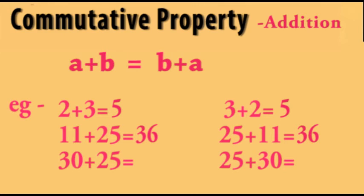Also, 30 plus 25 is equal to 55, and by changing the order, 25 plus 30 is also equal to 55. Hence, commutative property says: if you change the order of addends, the sum stays the same.